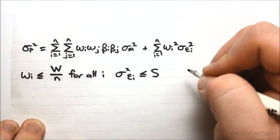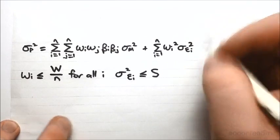And then the last thing we're going to say is that the average beta is going to be equal to 1.